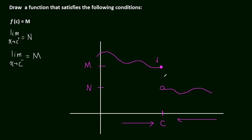And that's it. We're done. We've drawn a function that satisfies these three conditions. It's not too hard. It might seem daunting at first because all we have are letters and we don't have any real numbers to look at or work with.